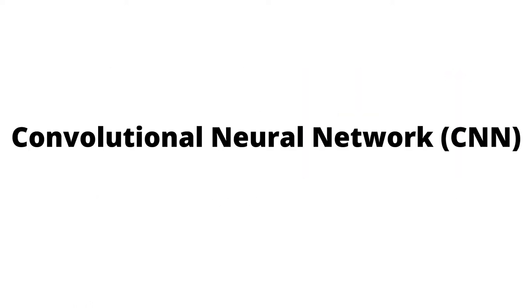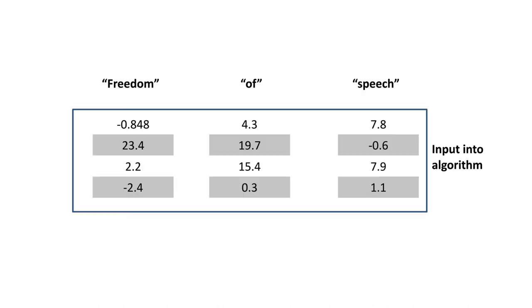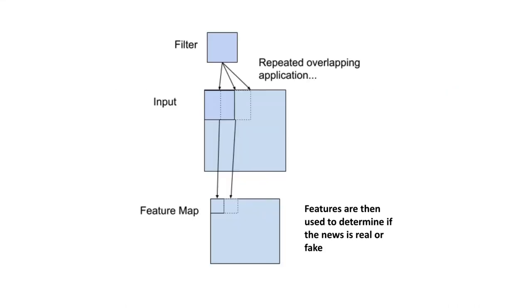For CNN, instead of reading the text in sequence, the words are converted into numerical features before being input into the algorithm. We then apply a filter to extract features of the text, which are combined into what we call a feature map, and this is used to determine whether a news article is real or fake.